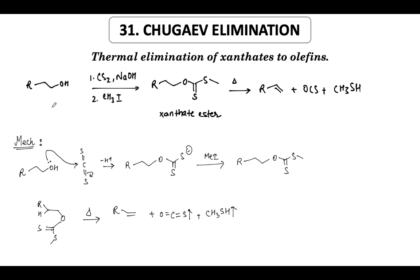We start with the alcohol — it could be a primary, secondary, or tertiary alcohol. But the reaction works much better with a primary alcohol because the xanthate is a bulky group; it forms nicely on a primary alcohol without much steric hindrance. We start from carbon disulfide and a base — the base could be NaOH or any other base that can remove the OH proton — and that gives you the alkoxide ion.